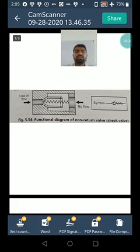The following non-return check valves are used in pneumatic systems: first check valve, second shuttle valve, third restrictor check valve, fourth quick exhaust valve, and fifth two pressure valve.